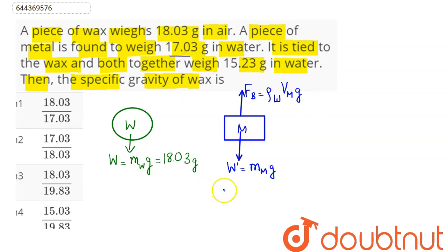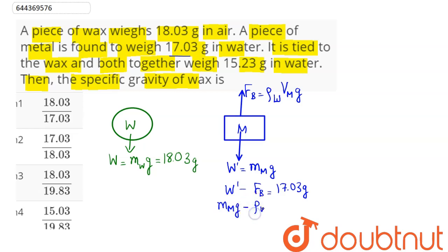This apparent weight W' equals 17.03g. So the equation is: mass of metal × g minus density of water × volume of metal × g equals 17.03g.